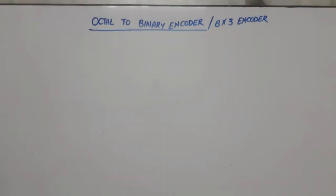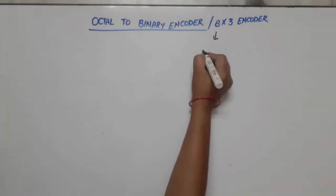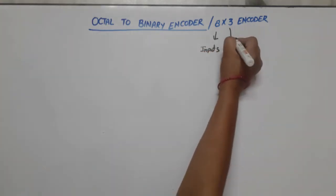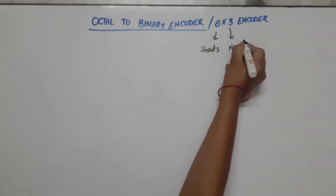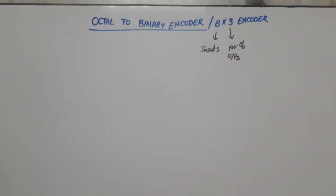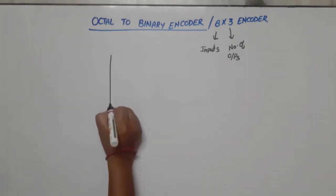In this video, I am going to discuss octal to binary encoder, or 8-to-3 encoder. How many inputs and outputs does it have? What is the function of the encoder? Basically, the encoder generates an output corresponding to the active input. Let's see the block diagram or symbol.